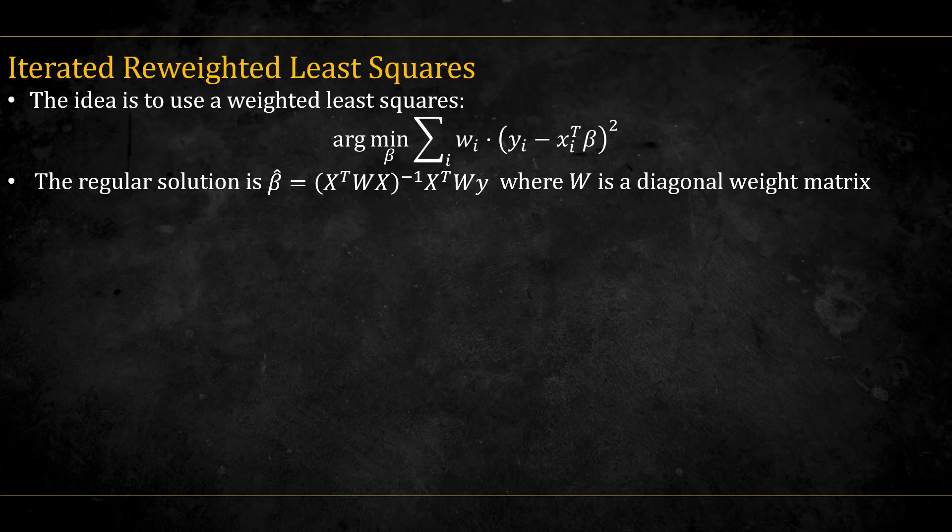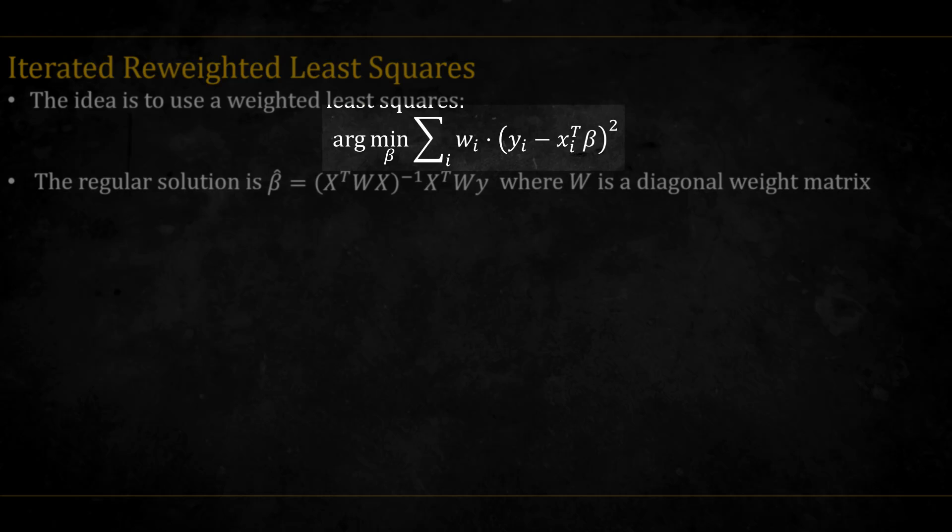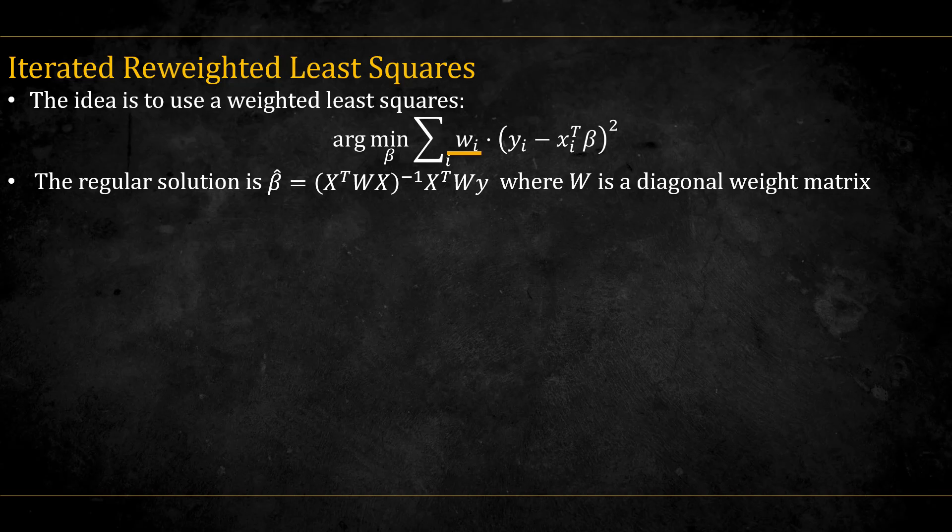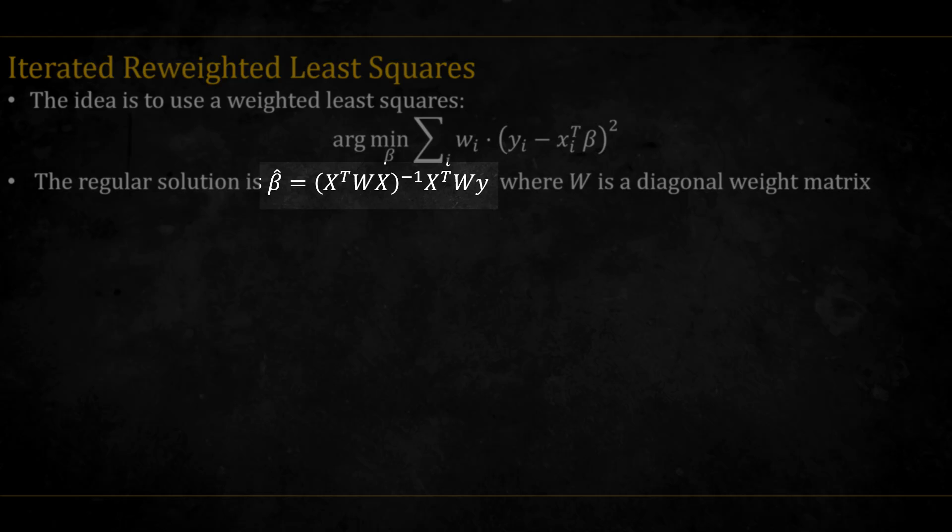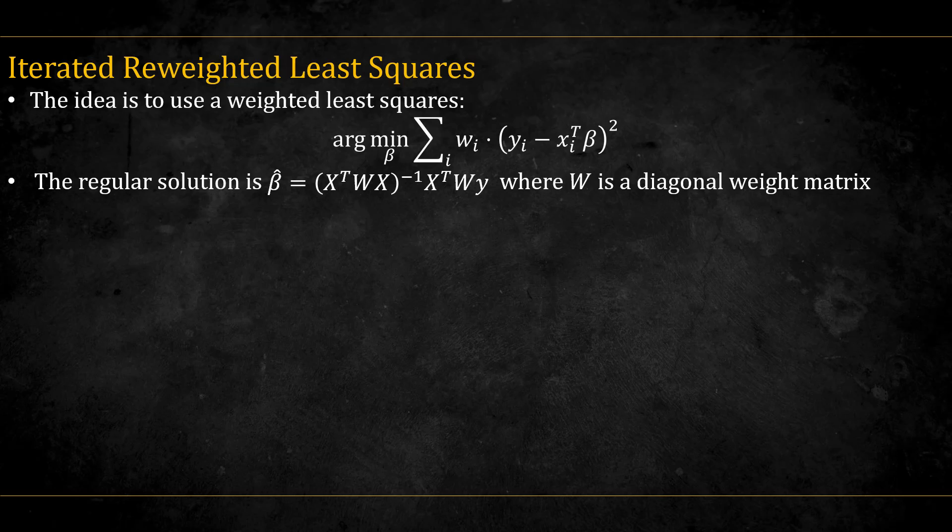Let's move to iterated reweighted least squares. The idea of this method is to use a weighted least squares solution. The weighted least squares problem is defined like this. Instead of regular squared errors, we add weights to each observations, making some observations more important than others, meaning we want the line to try to go through them more. This is a pretty easy problem with a standard solution. You can check out my generalized least squares video for more details.